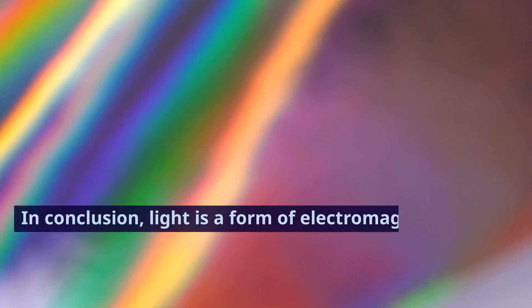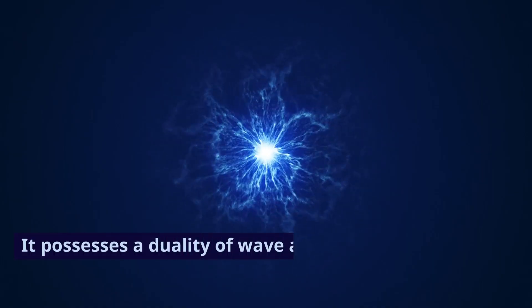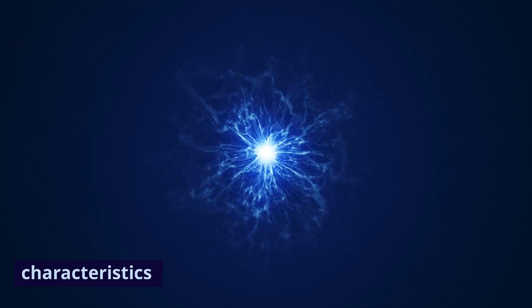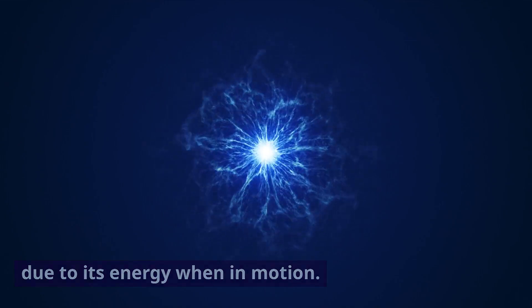In conclusion, light is a form of electromagnetic waves with oscillating electric and magnetic fields. It possesses a duality of wave and particle characteristics and has a rest mass of zero but has relativistic mass due to its energy when in motion.